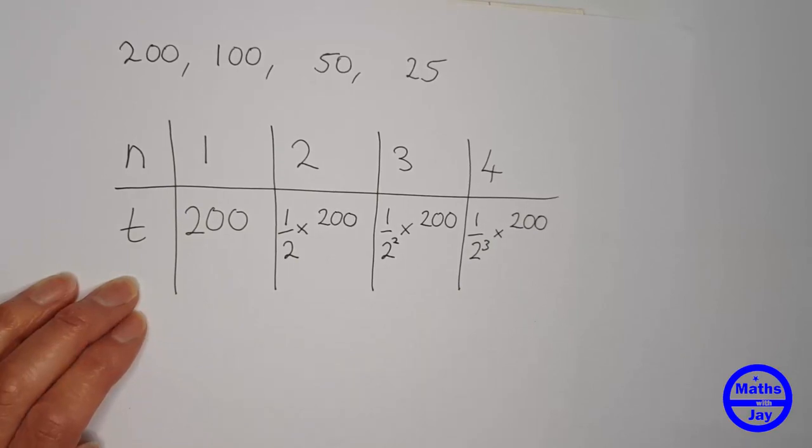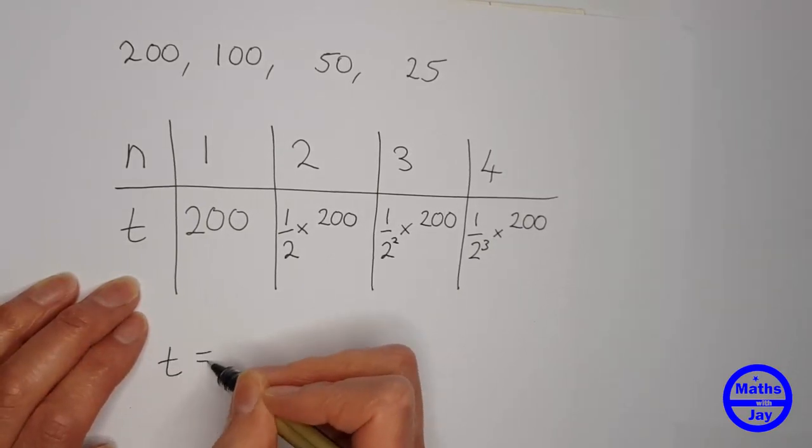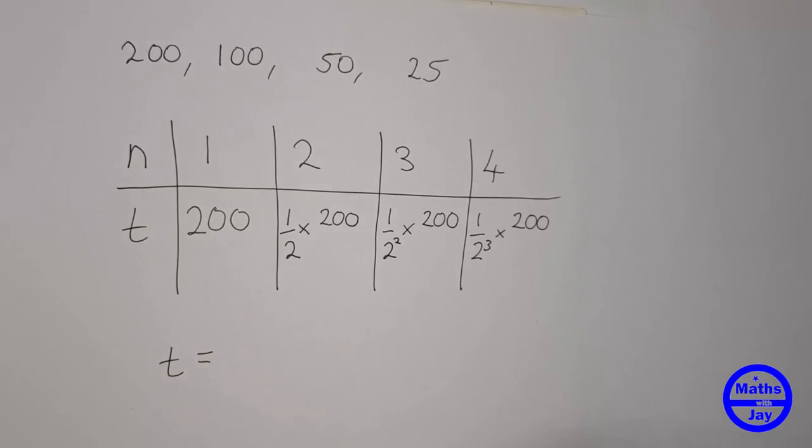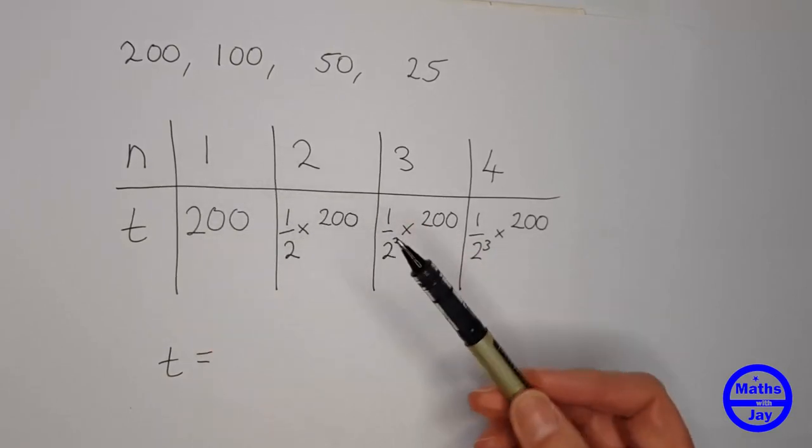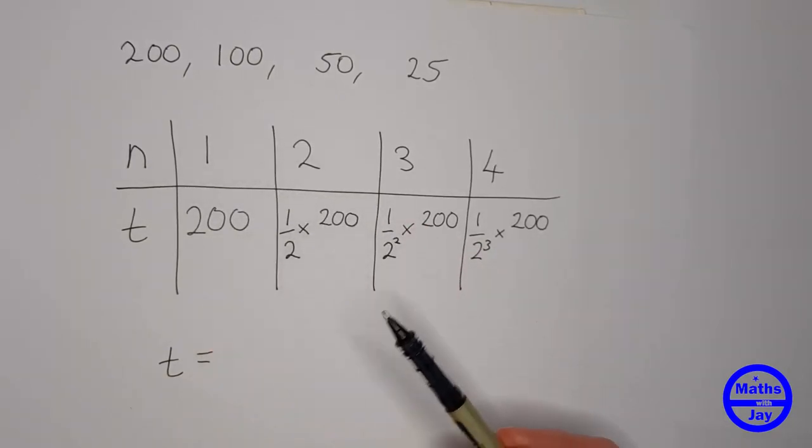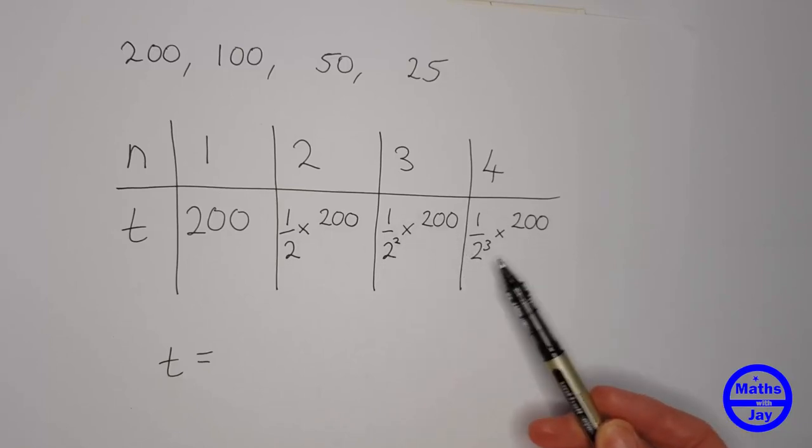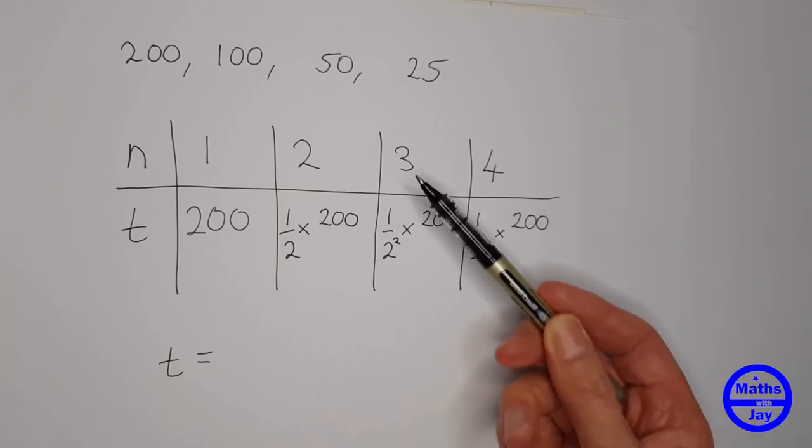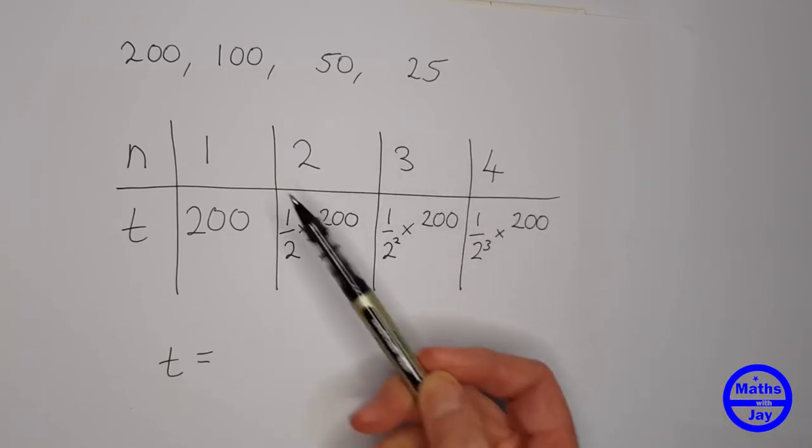So then when we want the general term, so we want to write down what t is in terms of n, we're thinking how do we get this kind of formula with this number in it each time, the n number.